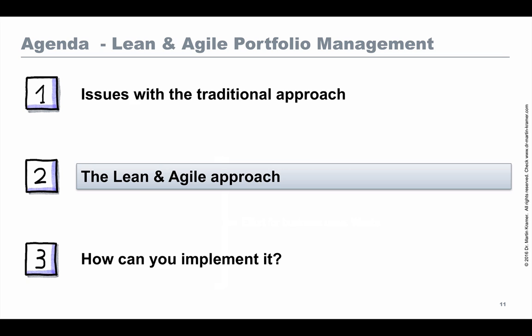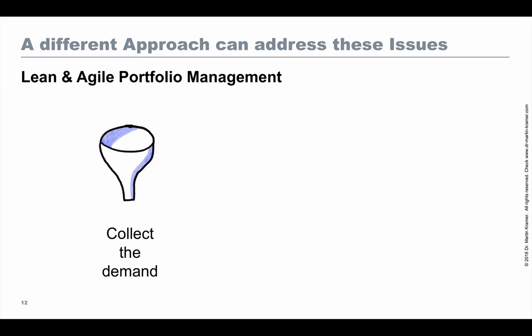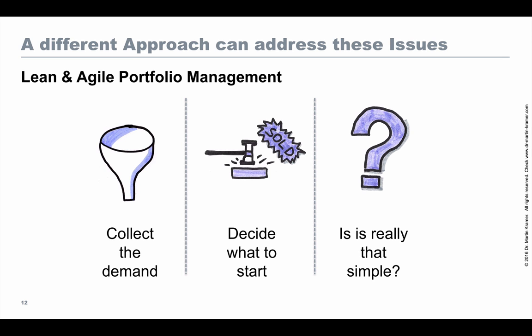Now that we have discussed issues with the traditional approach, I would like to present a different kind of approach: the lean and agile approach for portfolio management. I will cover it in three parts: how to collect the demand, how to decide what to start, and — is it really that simple?